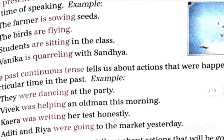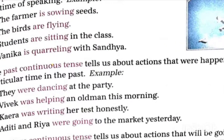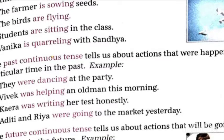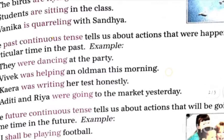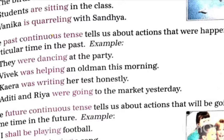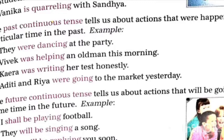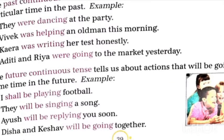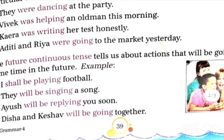Past continuous tense tells us about actions that were happening at a particular time in the past. For example: 'They were dancing at the party,' 'Vivek was helping an old man this morning,' 'Kaira was writing her test honestly,' and 'Aditi and Ria were going to the market yesterday.' Future continuous covers actions going to happen in the future, such as: 'I shall be playing football,' 'they will be singing a song,' 'Ayush will be replying to you soon,' and 'Disha and Keshav will be going together.'